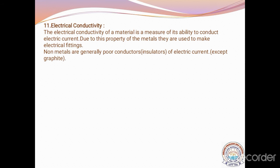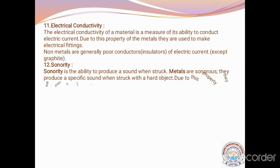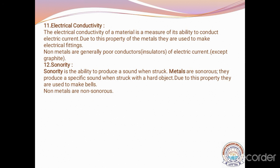Coming to the next property — sonority. Sonority is the sound-producing property. Mostly metals have this sonority property, and because of that they are used for making bells in temples, schools, and many places. Non-metals do not have the property of sonority — they are non-sonorous, meaning they cannot produce sound.